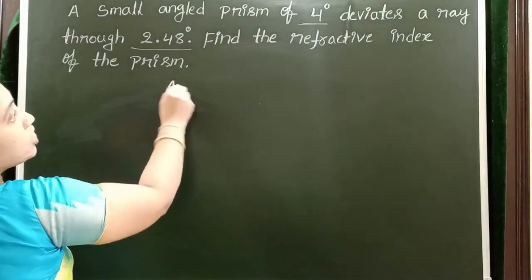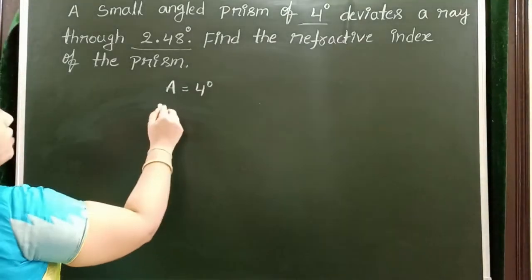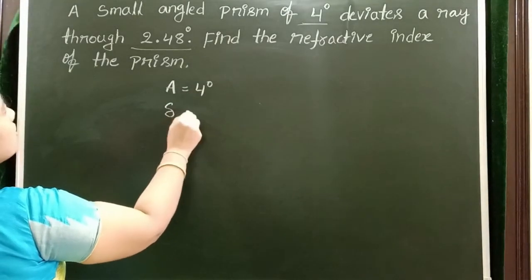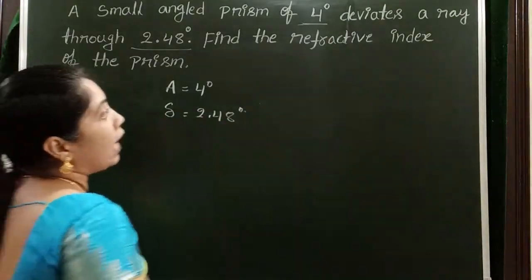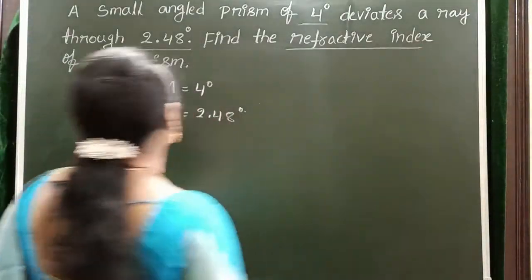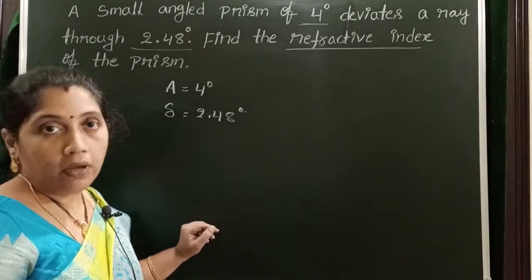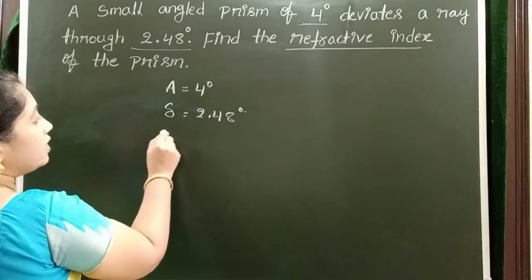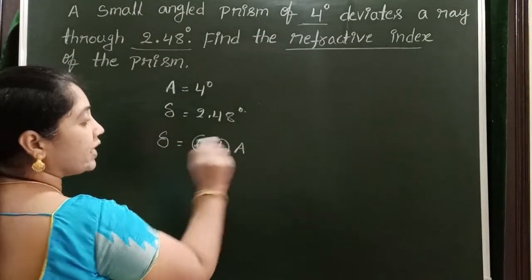Given: angle of the prism is 4 degrees and angle of deviation is 2.48 degrees. We have to find out the refractive index of the prism. For small angled prism, angle of deviation delta is equals to mu minus 1 into A.